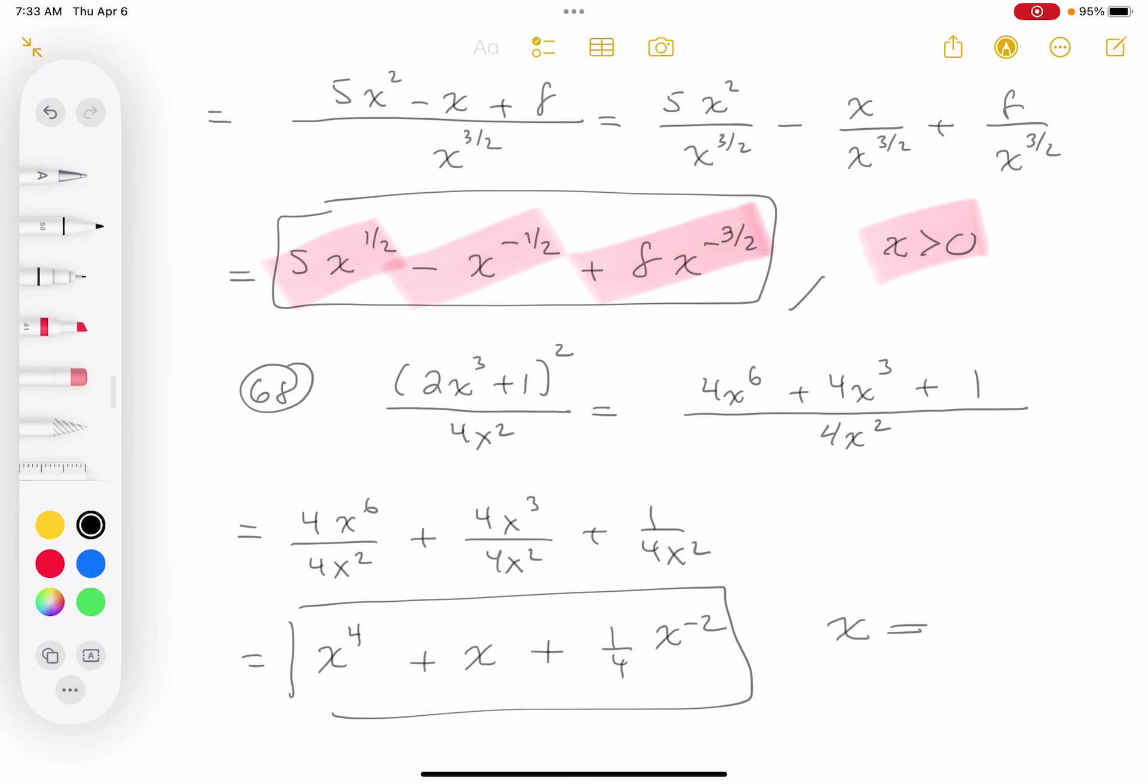I'm going to get the red pen out and look at the answer for 68. I'm hoping to see this, and I see it. I see all the terms and the restriction being listed.